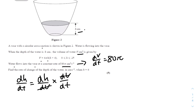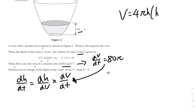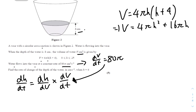Because you can just cancel these out to result in dh and dt. We already have the dV/dt value, which is 80π from the question. So now we have to find dh/dV. To do that, we need to use the formula which has V and h, given in the question: V = 4πh(h + 4). We can expand the bracket to be V = 4πh² + 16πh. Differentiating V with respect to h, dV/dh equals 8πh + 16π.